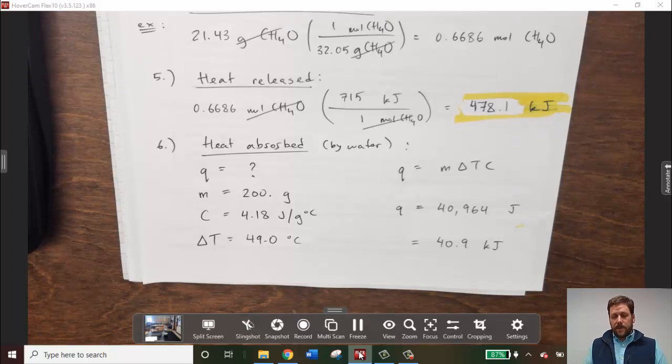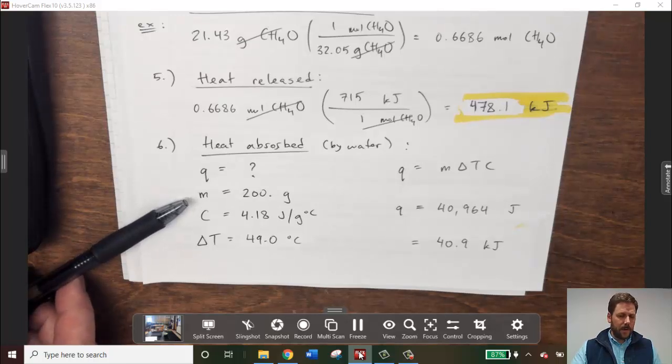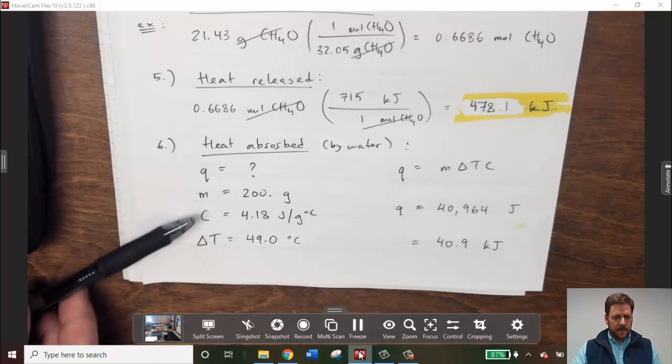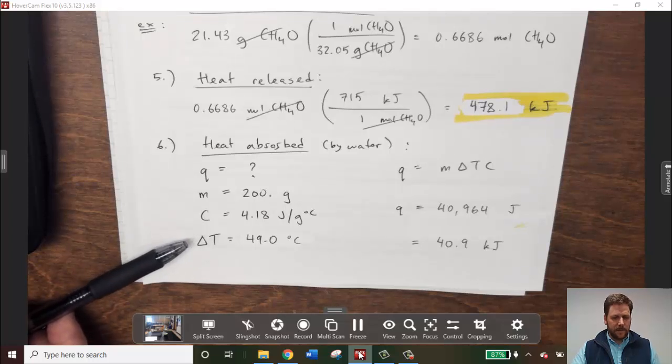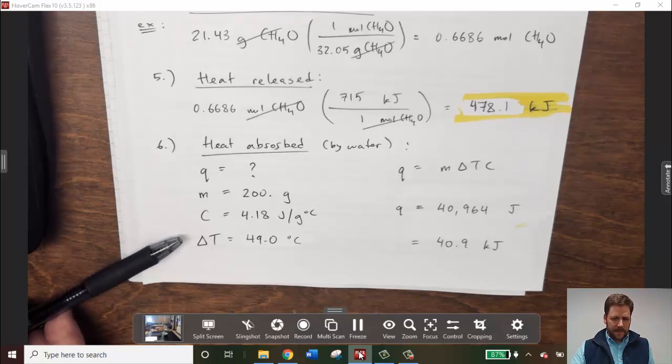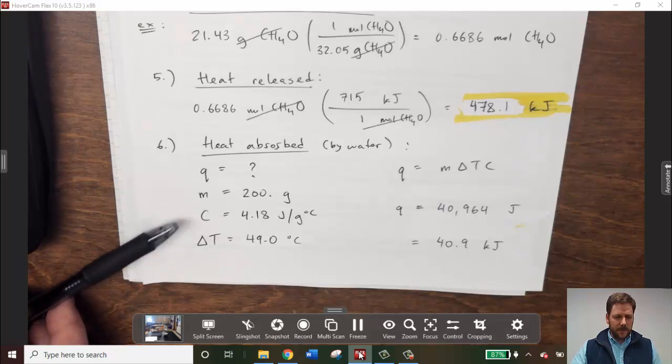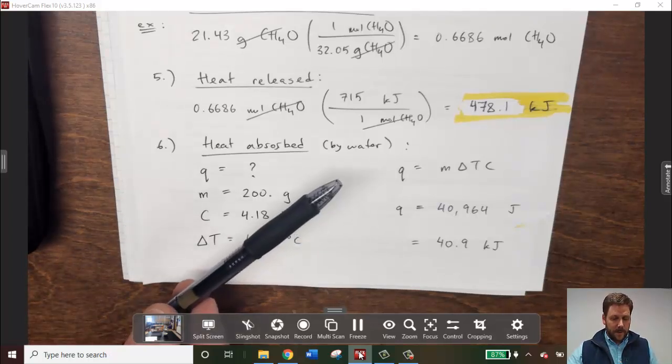In question number six, we're calculating how much heat must have been absorbed by the water. A correction that I made from the lab procedure here is I heated up 200 grams of water, not 100 grams of water like the procedure calls for. So please make a note of that. The mass of water we were heating was 200 grams. The specific heat capacity of water, of course, is 4.18 joules per gram degree Celsius. If you look at the data table we wrote down second, the total temperature change as the water was heated from 21 degrees all the way up to 70, that means a 49 degree temperature change. Final minus initial, or maximum minus minimum.